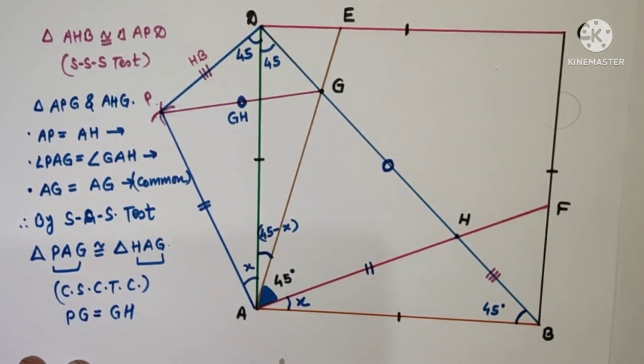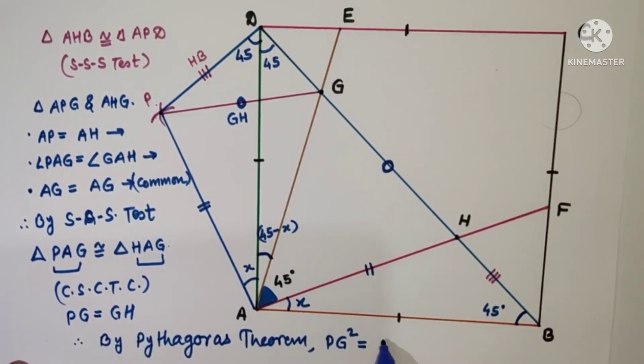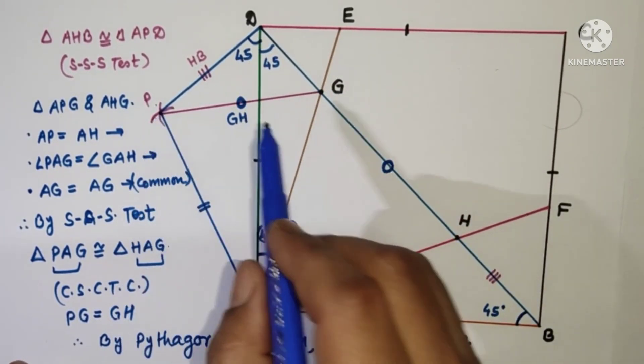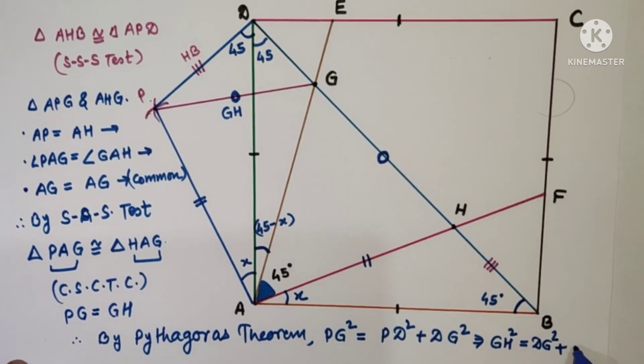So by Pythagoras theorem, this PG is equal to GH. So we can say that GH square is equal to HB square plus DG square. DG square plus HB square.